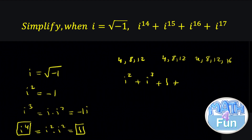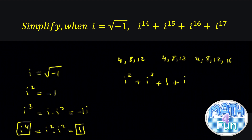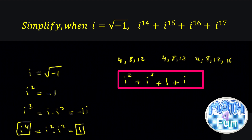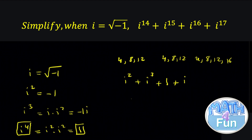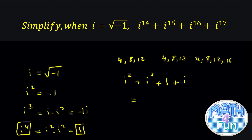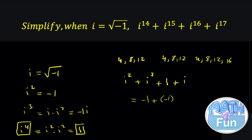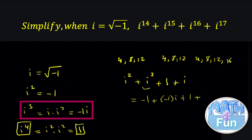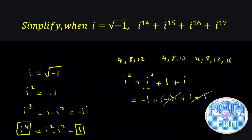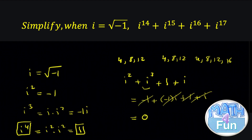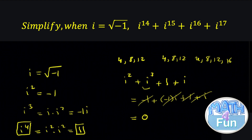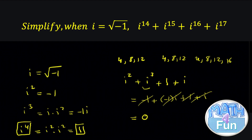So this becomes i squared plus i cubed plus 1 plus i, and then you can evaluate this with a calculator — the normal one can do that — or you can do it manually. i squared equals minus 1, plus i cubed equals minus i, so we have minus 1 minus i plus 1 plus i. Now, minus i plus i cancel, and minus 1 plus 1 cancel, giving a final answer of 0. This is in case you don't have the FX991EX. I hope you can buy that calculator — it's very cheap, and it performs all complex number operations easily.